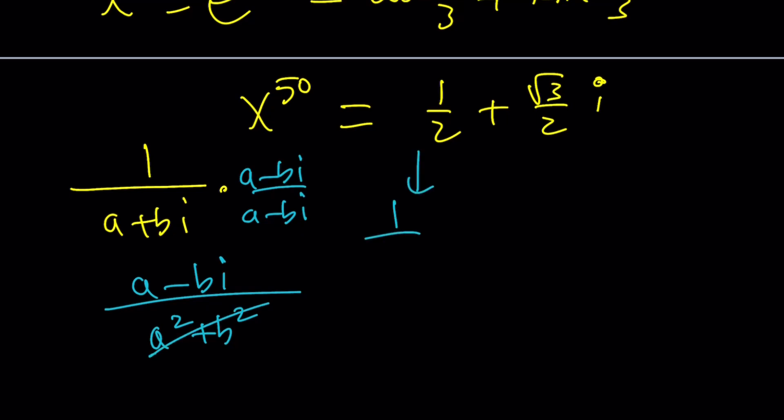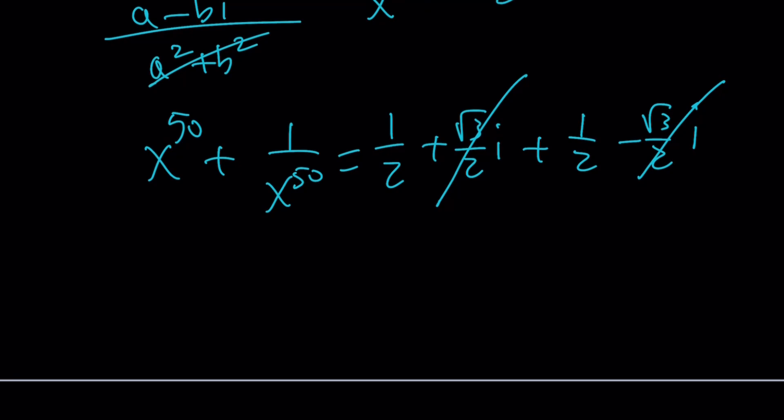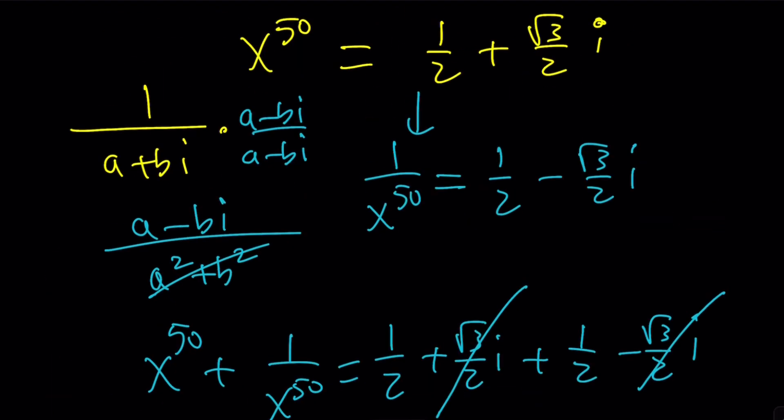In other words, if x to the 50th is this number, its reciprocal is going to be its complex conjugate. When you add them, you're going to get something super simple. If you add 1 half plus root 3 over 2i and 1 half minus root 3 over 2i, root 3 over 2i is going to cancel out. 1 half plus 1 half is going to be 1. So the answer is 1. Hard to believe, but that's the answer. That is the first method.